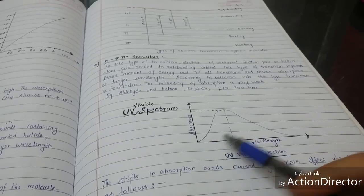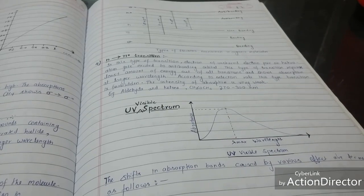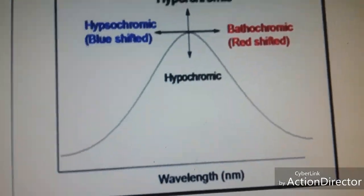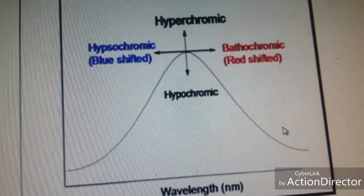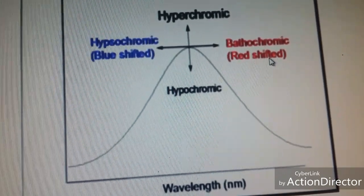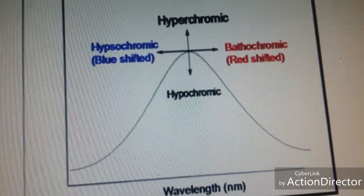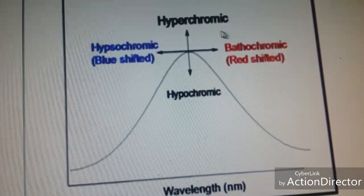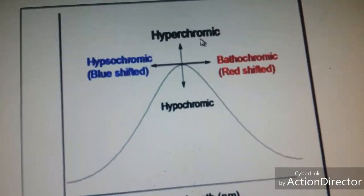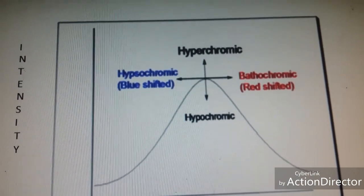Now let us talk about the general UV visible spectrum and shifts in the absorption band caused by various effects. If the shift is towards longer wavelength, it is known as bathochromic shift or red shift. If the shift is towards shorter wavelength, that is the blue end, it is known as blue shift or hypsochromic shift. If it is towards higher intensity, it is known as hyperchromic shift, and if it is towards lower intensity, it is known as hypochromic shift.